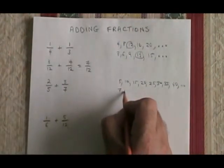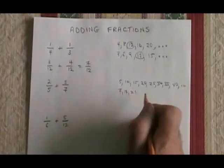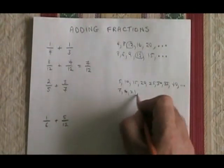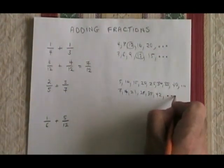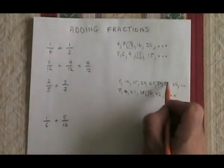For 7, I have 7, 14, 21, 28, 35, 42, and it keeps going. The lowest number that's on both lists is the 35.